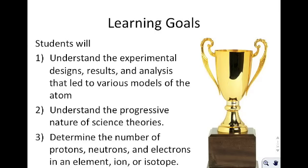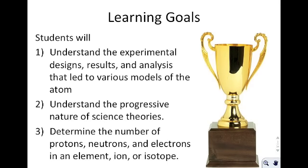The learning goals. First, you should be able to understand the experimental design, results, and analysis that led to the various models of the atom. It's not enough to just say this is the Bohr model; you need to understand why it's the Bohr model and what it addresses. You need to understand the progressive nature of scientific theories, and you also need to be able to determine the number of protons, neutrons, and electrons in an element, ion, or isotope.